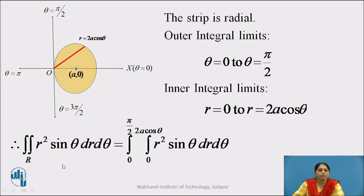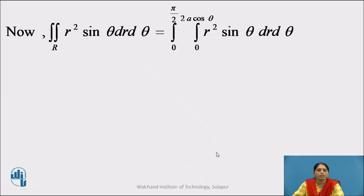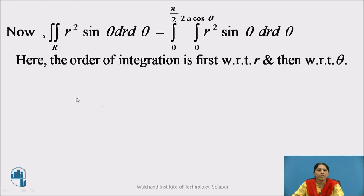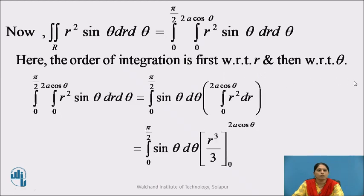Therefore, the given integral — double integral over R of R squared sin theta dr d theta — becomes integration from 0 to pi by 2, integration from 0 to 2A cos theta, of R squared sin theta dr d theta. The order of integration is first with respect to R and then with respect to theta.